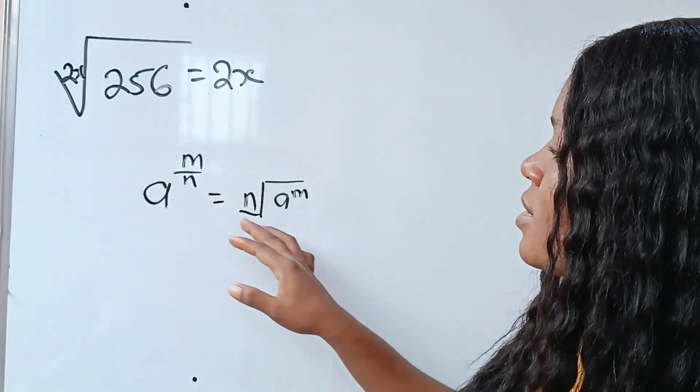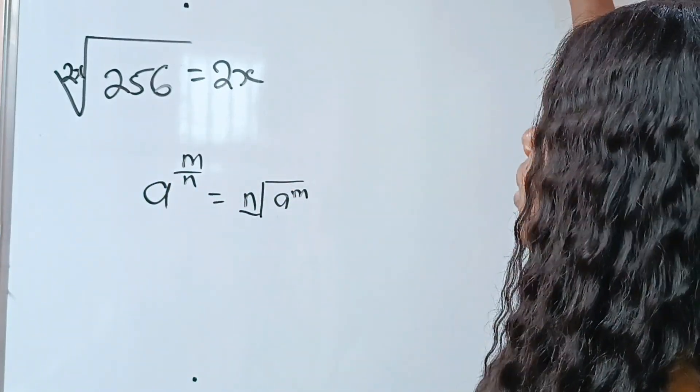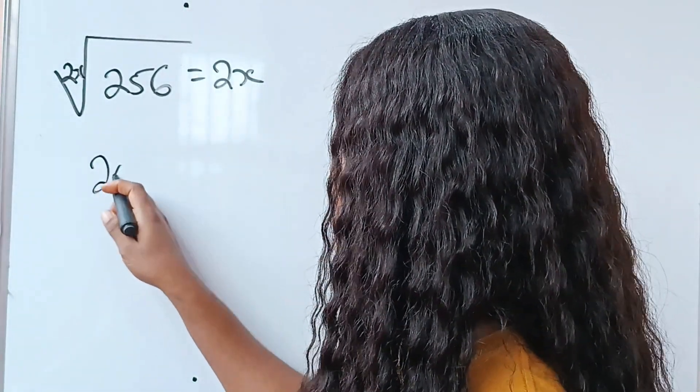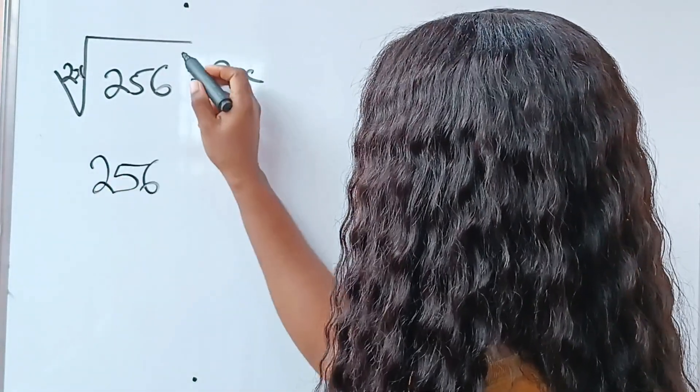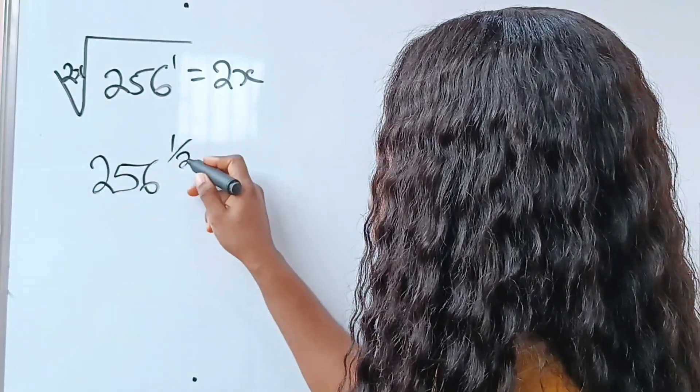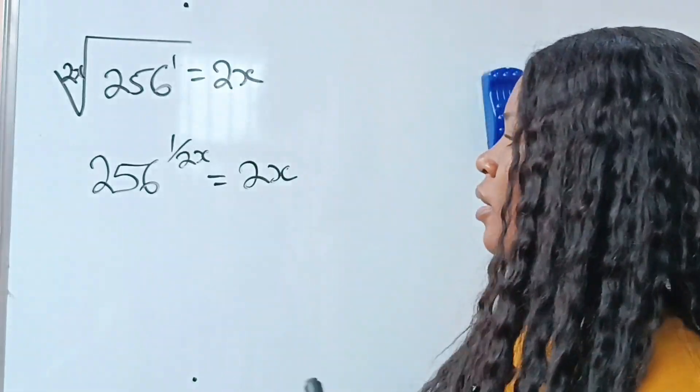Now, we need to write this in this form. So that simply means that we can rewrite this as 256 raised to the power of, because this is 1, it's going to be 1 divided by 2x, which is equal to 2x.